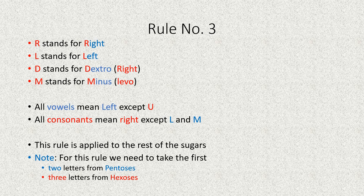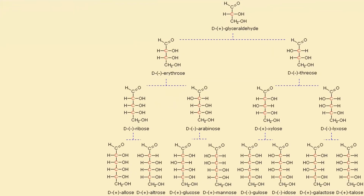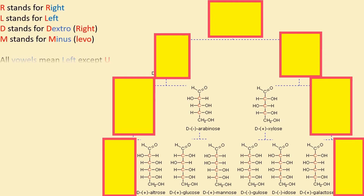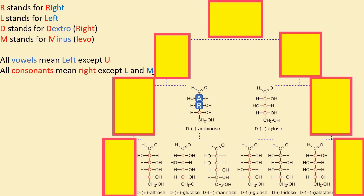For rule three, we take the first two letters from pentoses and the first three letters from hexoses. For arabinose, the first two letters are A and R. A is a vowel, so the hydroxyl group on that carbon is on the left side. R stands for right, so the hydroxyl group on that carbon is on the right side.